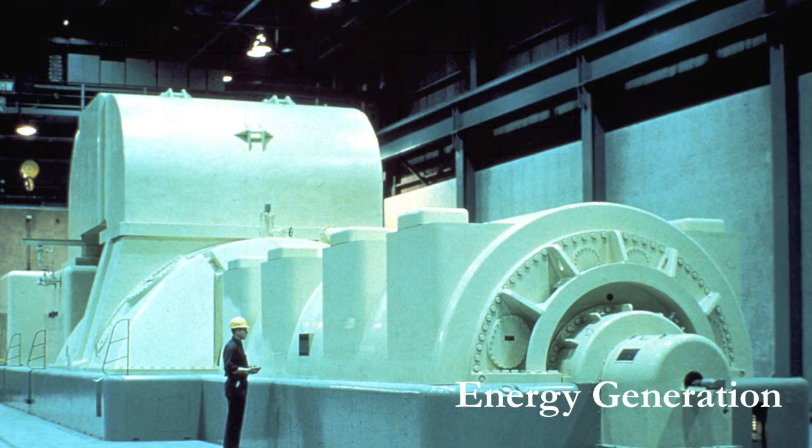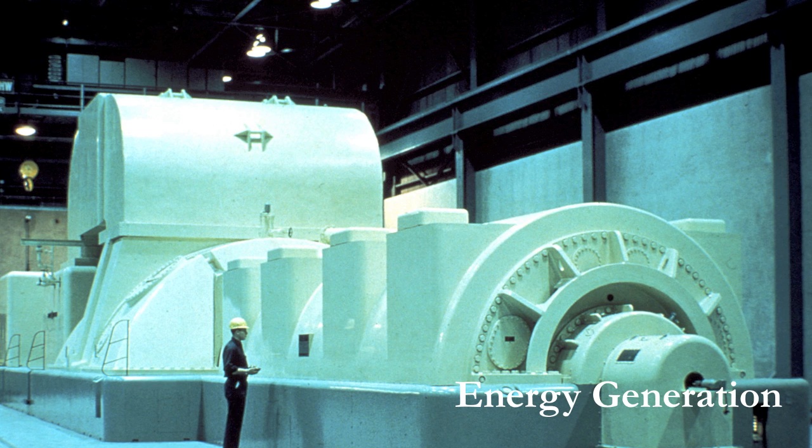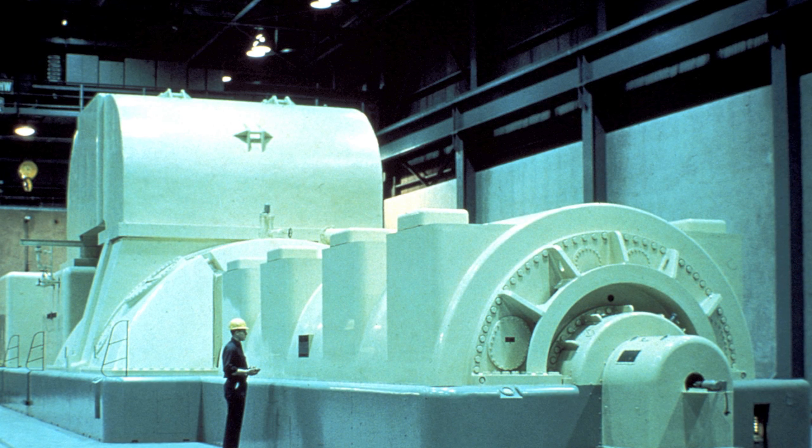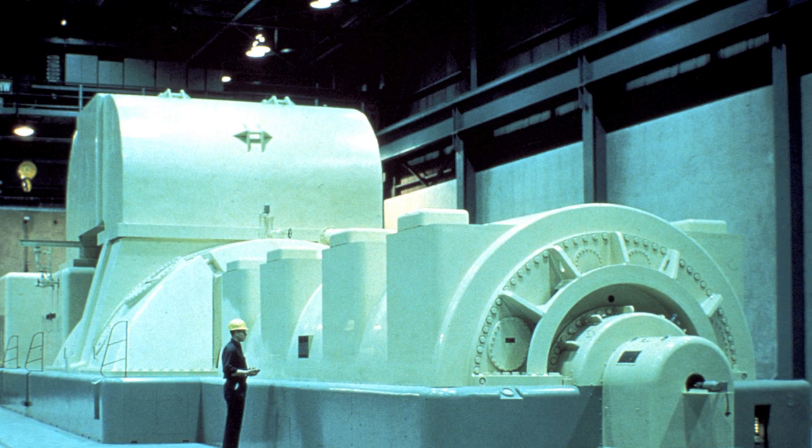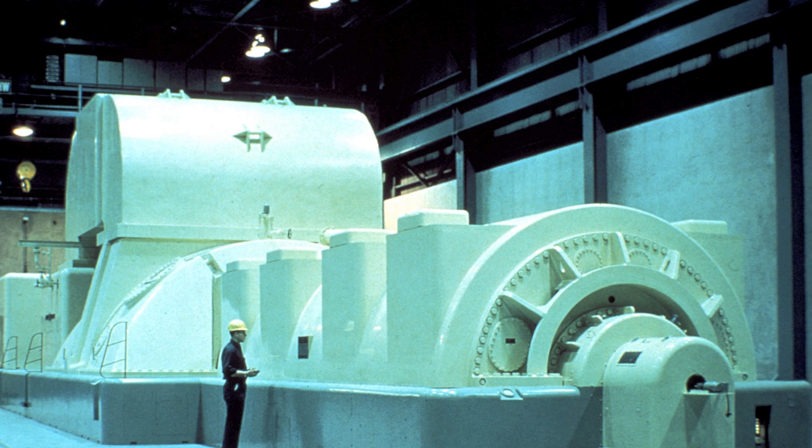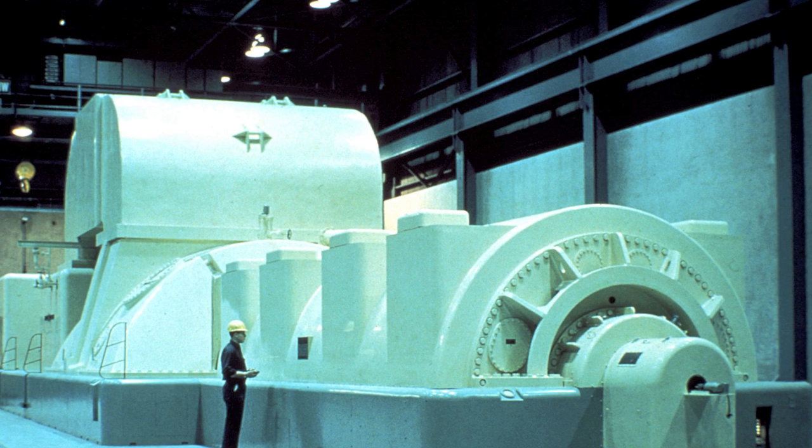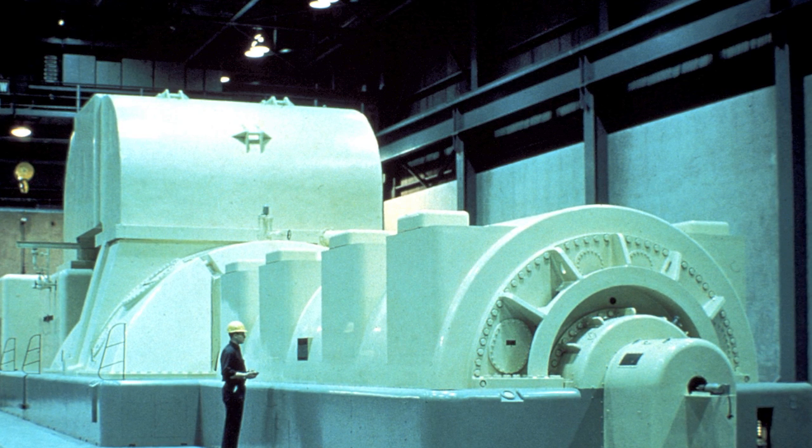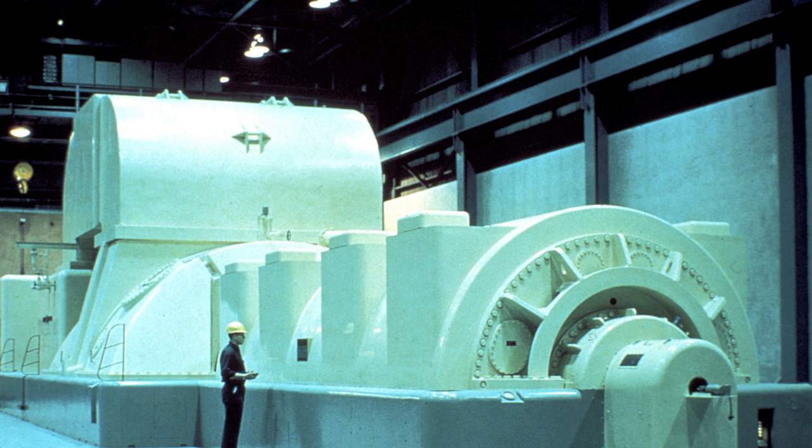Finally, energy generation. The syngas produced is fed to an internal combustion engine, or a boiler to heat steam for a turbine to generate electricity. The converted energy will then be used to maintain the plasma torch, and the surplus electricity will be sold to the grid.